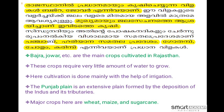The Punjab Plain is an extensive plain formed by the depositions of the Indus and its tributaries. Since the Sindhu is part of the region spanning Punjab and Haryana, the major crops here are wheat, maize and sugarcane.